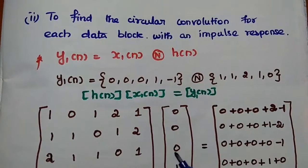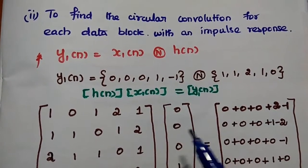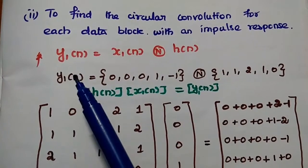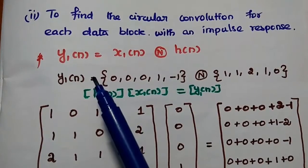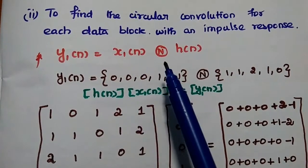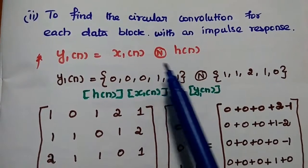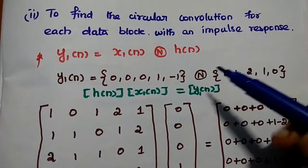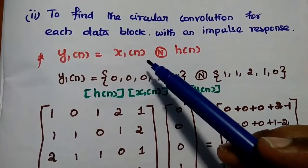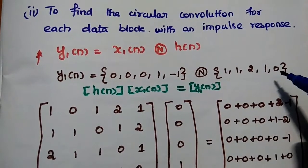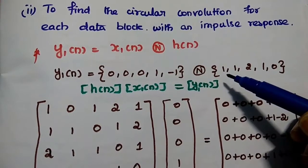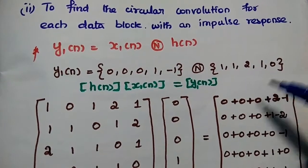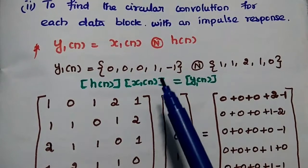After dividing the long duration input sequence into blocks, the next step is to find the circular convolution for each data block with the impulse response h(n). We are going to find the response of each data block. For y1(n) = x1(n) circularly convolved with h(n), we must ensure both sequences have the same size. Since x1(n) has 5 samples but h(n) has only 4, we add one zero to h(n) to make it length 5, giving h(n) = {1, 1, 2, 1, 0}.